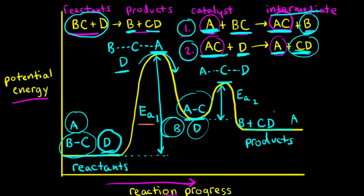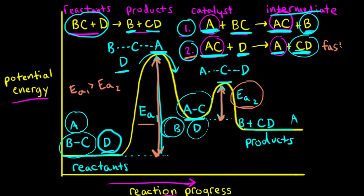Next, let's compare the first activation energy EA1 with the second activation energy EA2. Looking at the energy profile, we can see that EA1 is a much greater activation energy than EA2, so EA1 is greater than EA2. The smaller the activation energy, the faster the reaction. Since there's a smaller activation energy for the second step, the second step is the faster of the two. Since the first step has the higher activation energy, the first step is slow — and therefore the first step is the rate-determining step.